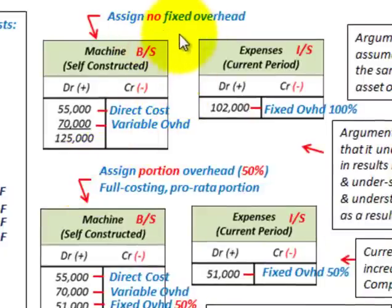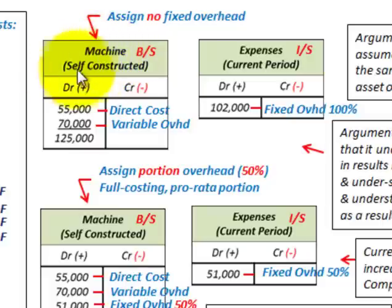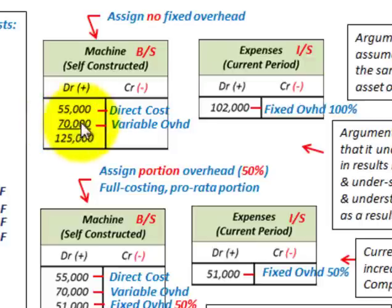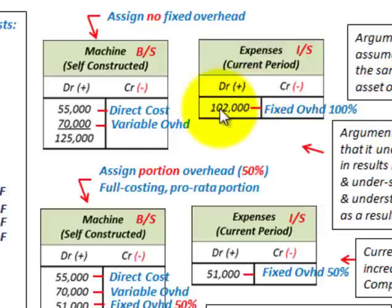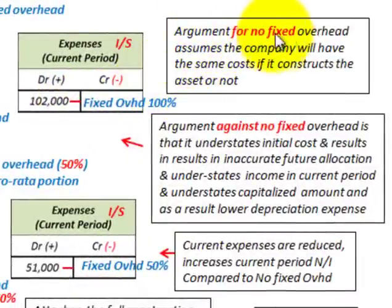Let's look at how we assign these overhead costs. First, assigning no fixed overhead — that's our first alternative. We wouldn't assign any fixed overhead to the machine construction. So what's included in the machine cost would be our direct costs of $55,000 — that was our labor and material — and we'd also include the variable cost of $70,000, since that was a direct result of this construction process. Our total machine cost is $125,000.